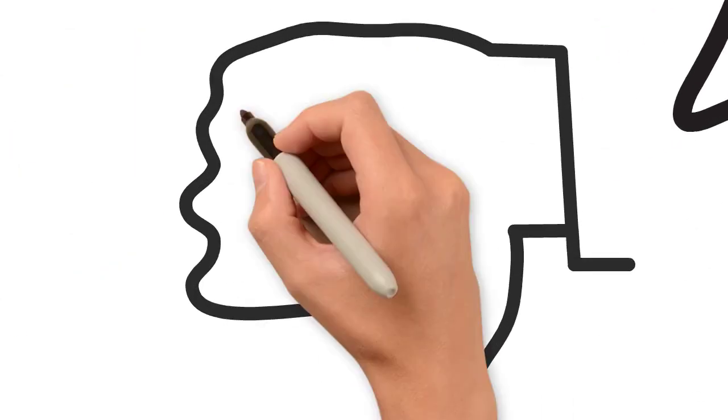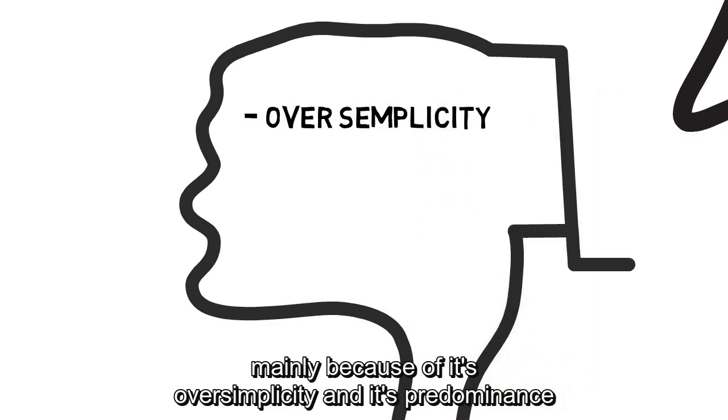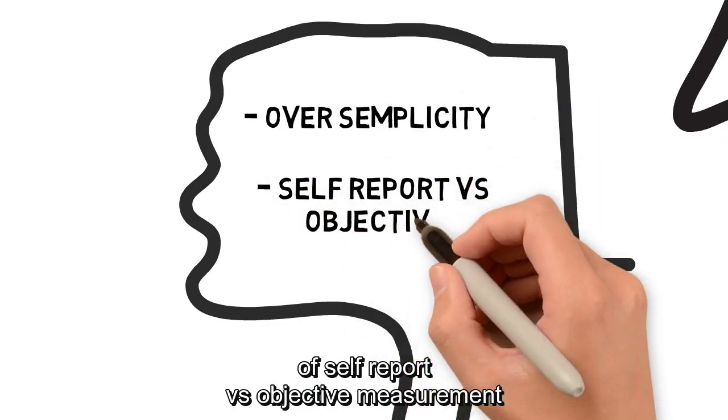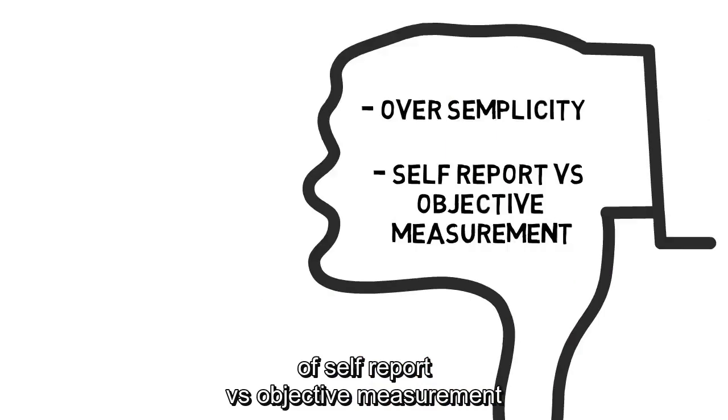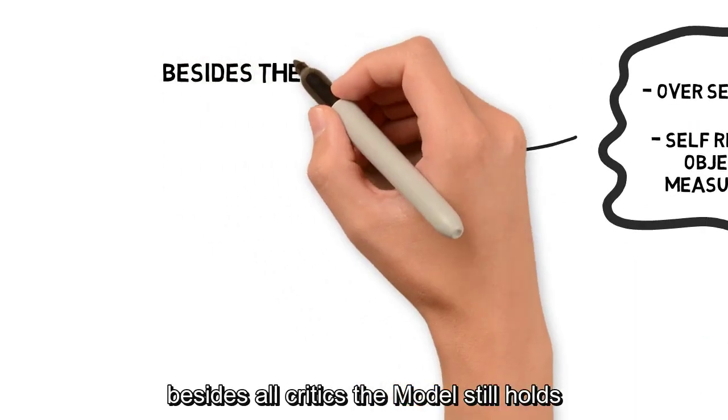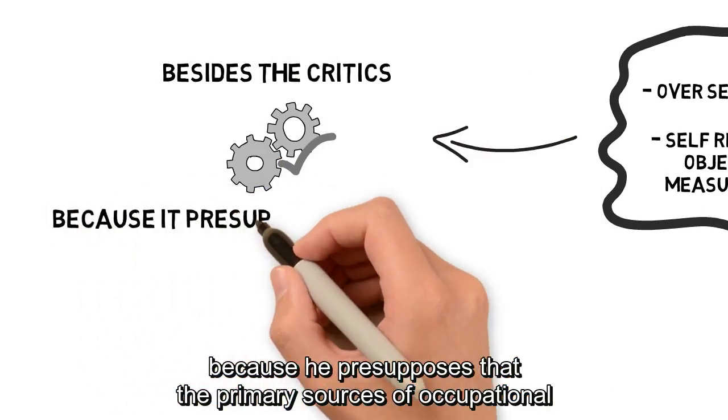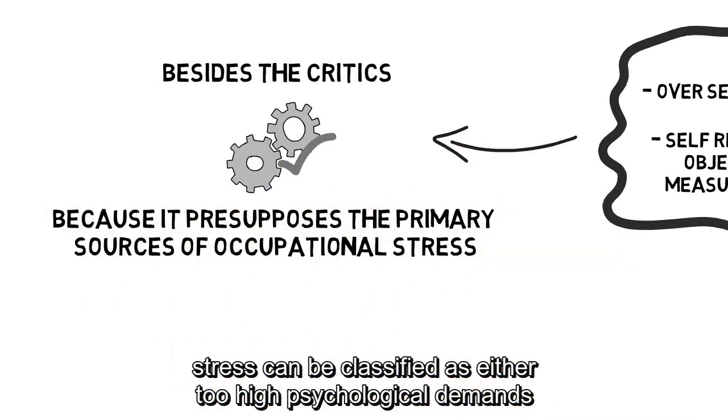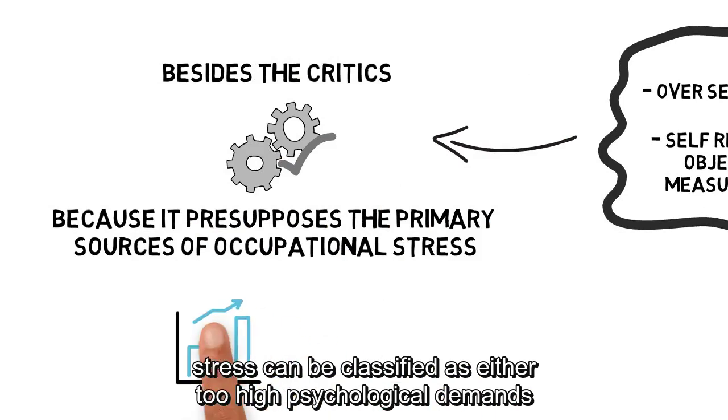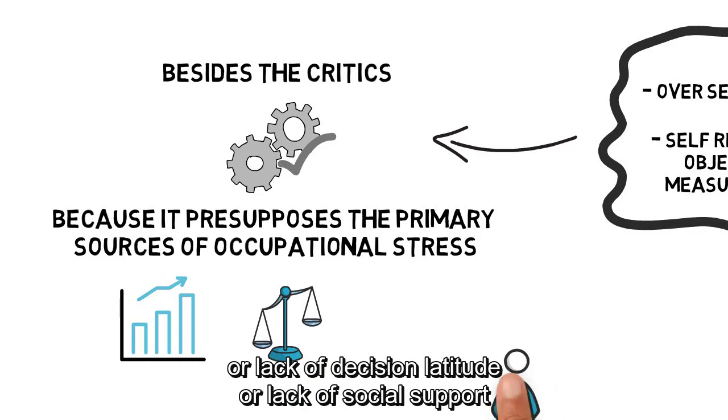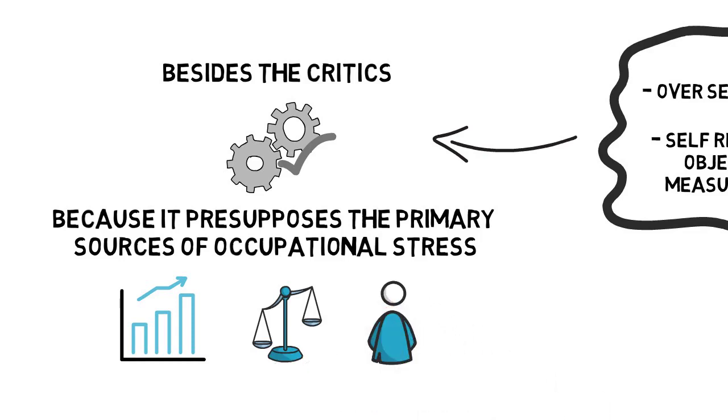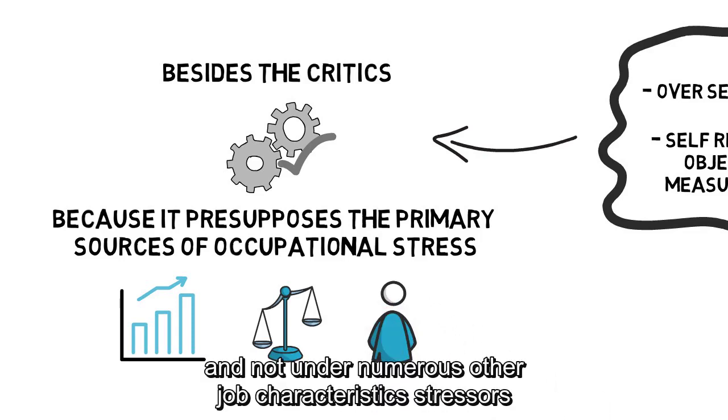Also, the last model has been widely criticized, mainly because of its oversimplicity and its predominance of self-report versus objective measurement. Besides all critics, the model still holds because it presupposes that the primary sources of occupational stress can be classified as either too high psychological demands or lack of decision latitude or lack of social support, and not under numerous other job characteristics called stressors.